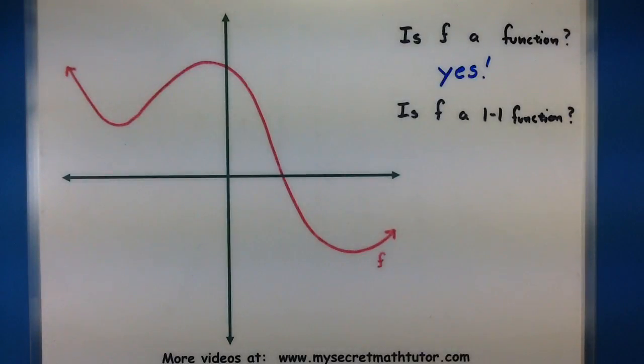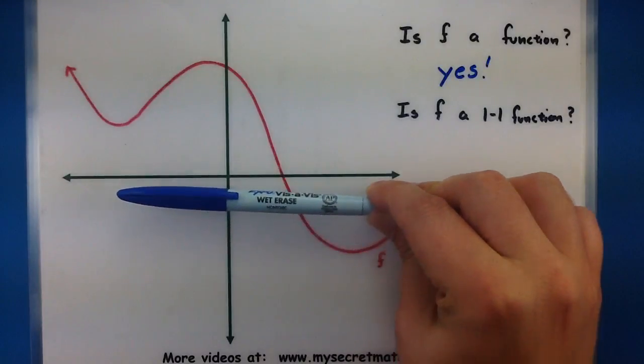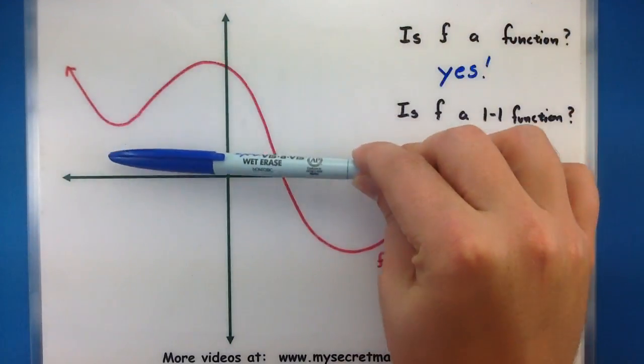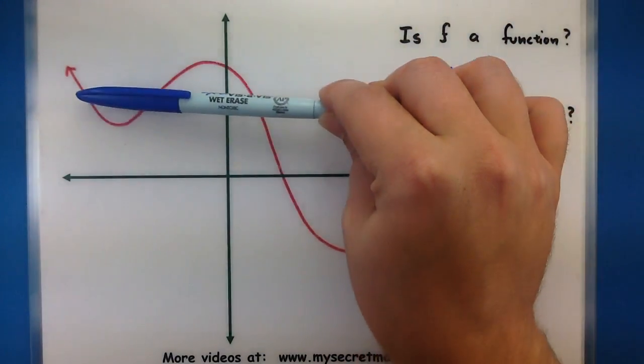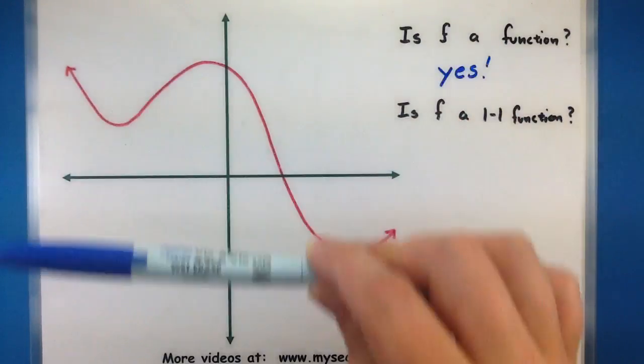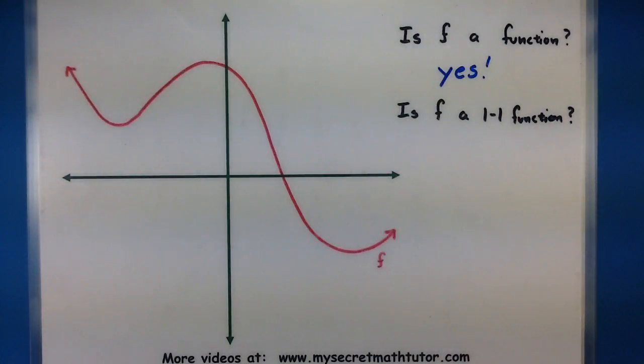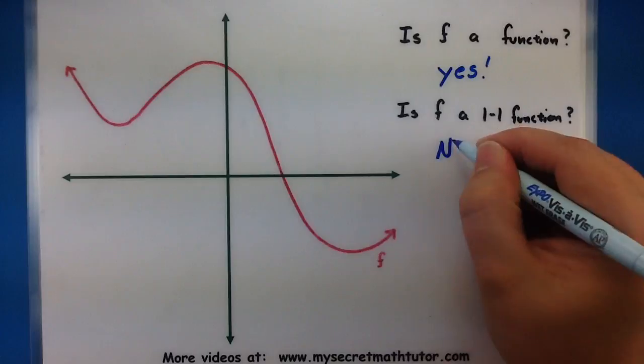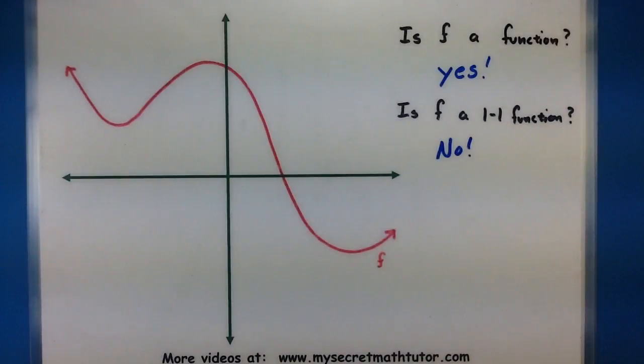Now to take a little bit of an extra step and say well is it a one to one function. Now we're going to use the horizontal line test and say okay if I put a horizontal line on here does it ever cross in more than one spot. It looks like it does. So if it does cross in more than one spot then you say no it is not a one to one function.